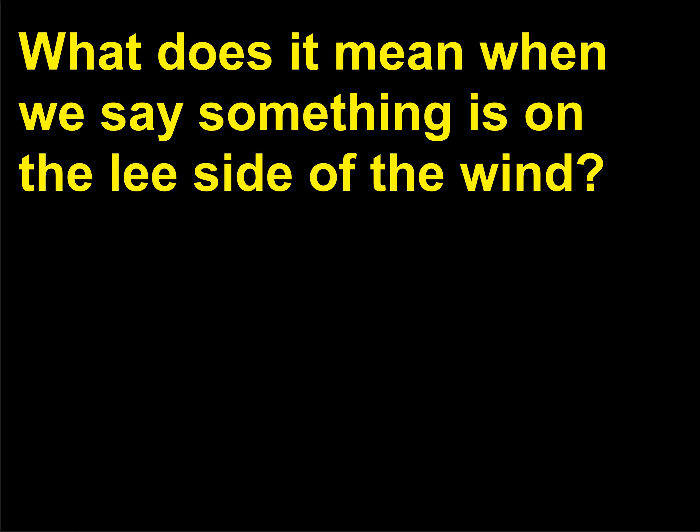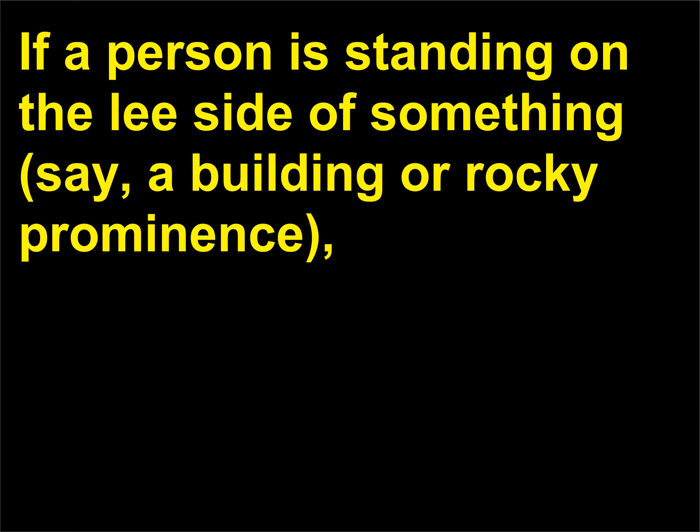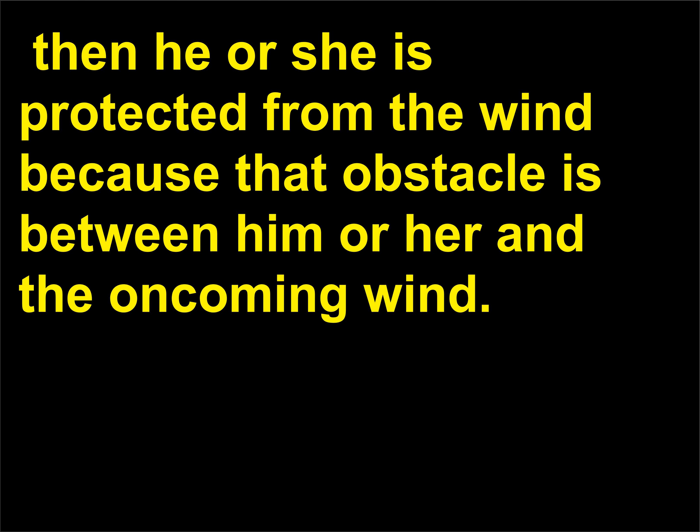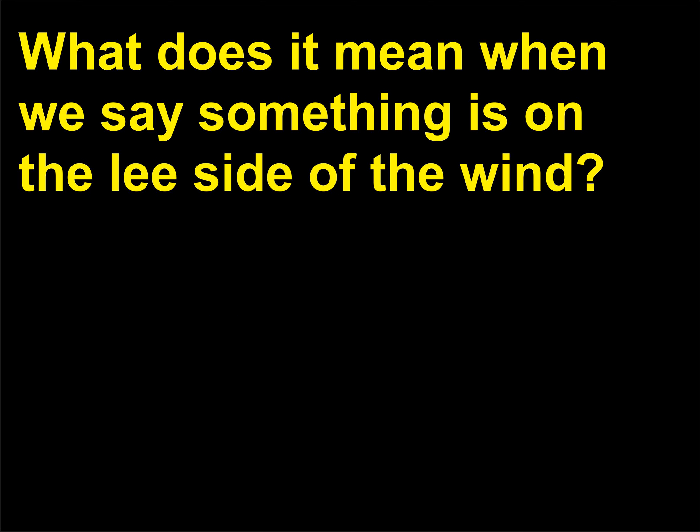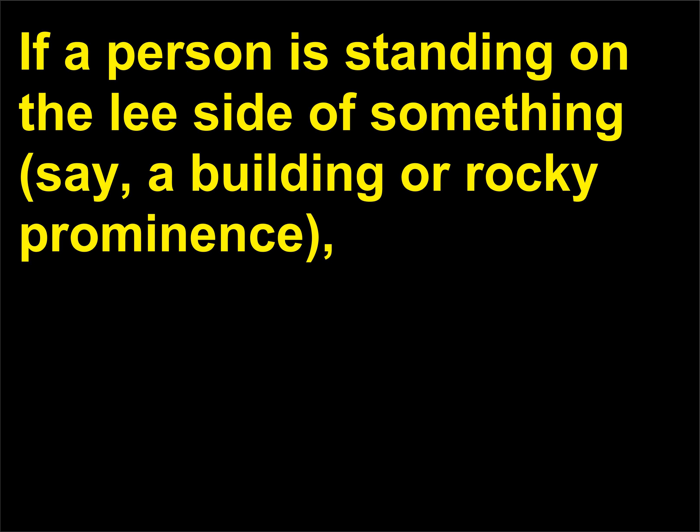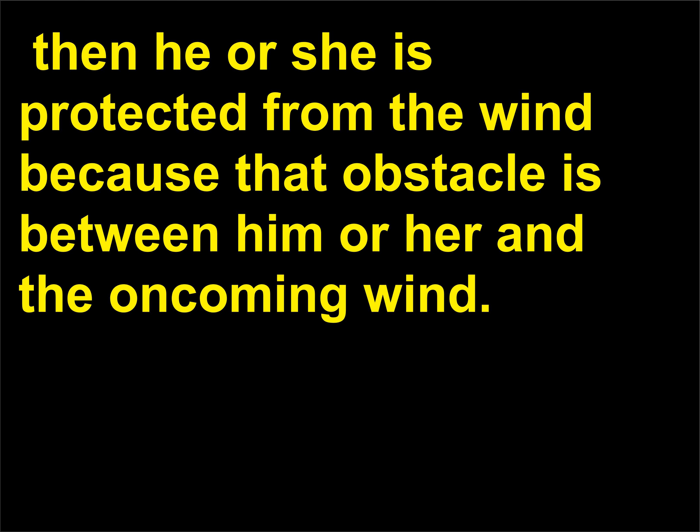What does it mean when we say something is on the lee side of the wind? If a person is standing on the lee side of something — say, a building or rocky prominence — then he or she is protected from the wind because that obstacle is between him or her and the oncoming wind.